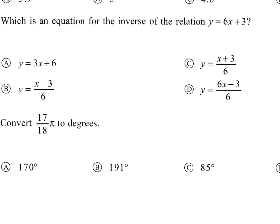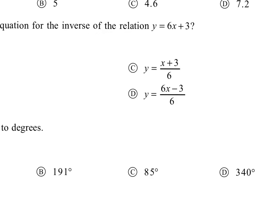For number 13, we're looking at finding the inverse for a linear equation. I'd like to remind you the procedure for finding an inverse is we're going to switch our variables. So this becomes x equals 6y plus 3.